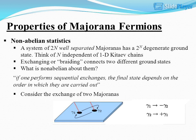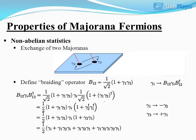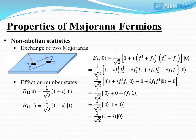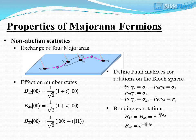What is non-Abelian about Majoranas? If one performs sequential exchanges, the final state depends on the order in which they are carried out. Consider the exchange of two Majorana fermions. A braiding operator is defined. The effect on number states is examined when exchanging two Majorana fermions.